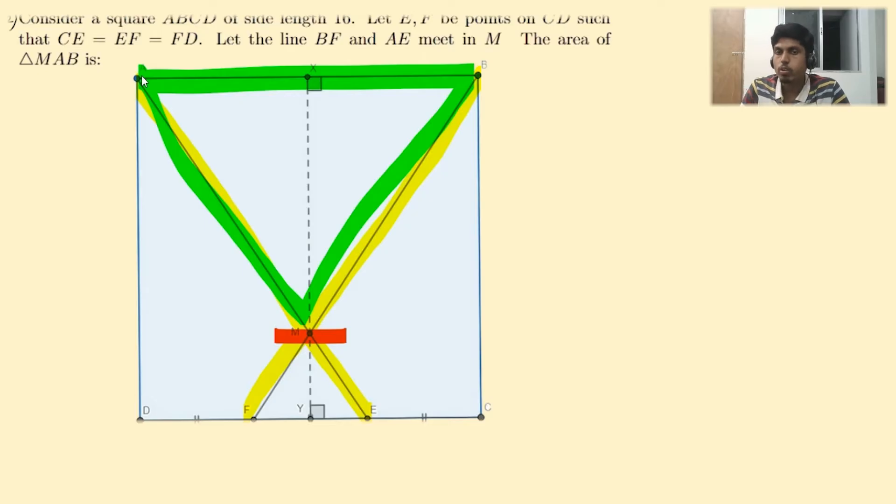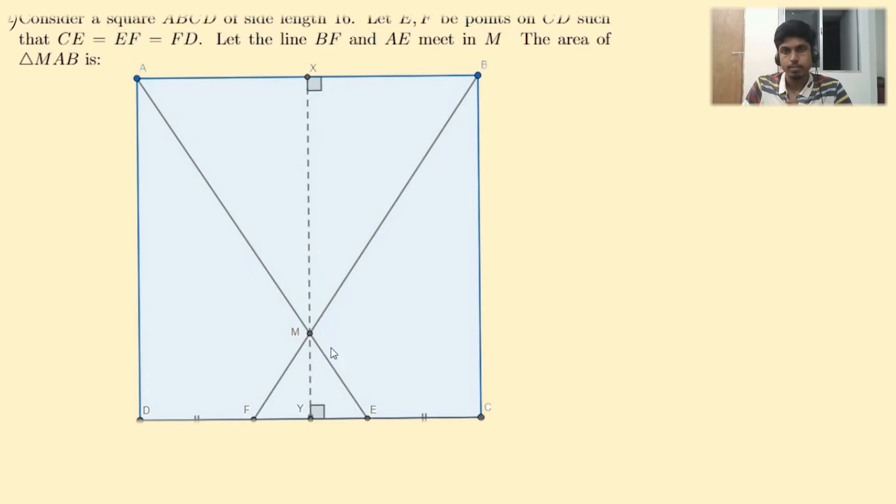The construction X and Y are not given as per the question. They are the apparent construction which will lead to the solution. Draw perpendicular from M onto AB and CD, and let's call the foot of perpendicular to be X and Y respectively.